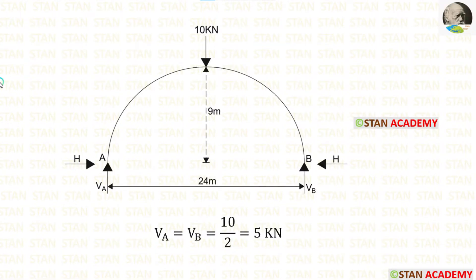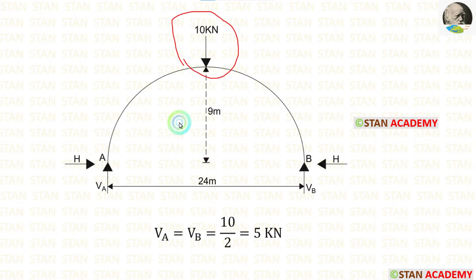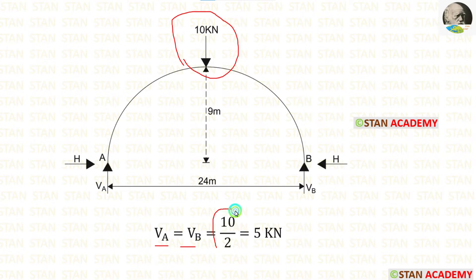First, let us calculate the vertical reactions. This arch has symmetrical loading conditions — a point load acting at the center. Since the loading is symmetrical, we can easily calculate the vertical reactions Va and Vb by dividing the load by 2, giving us 5 kN each.